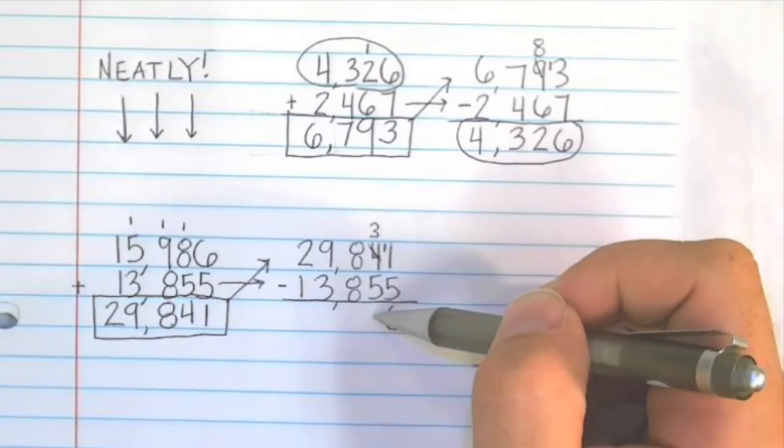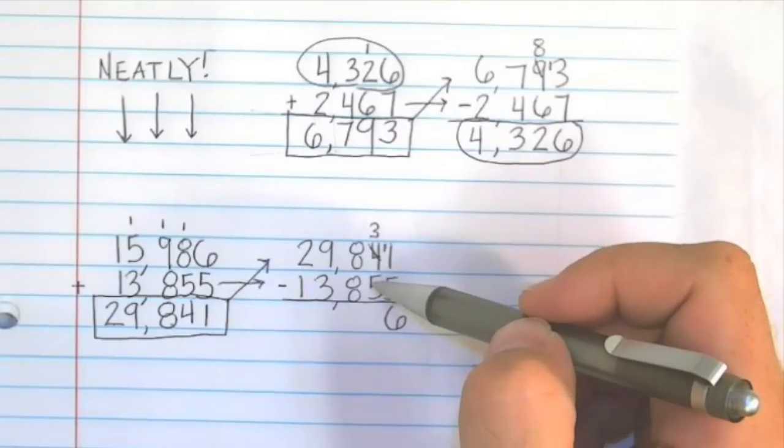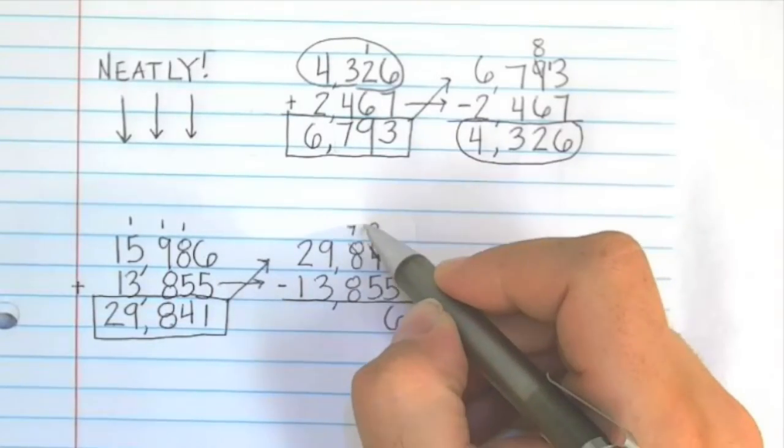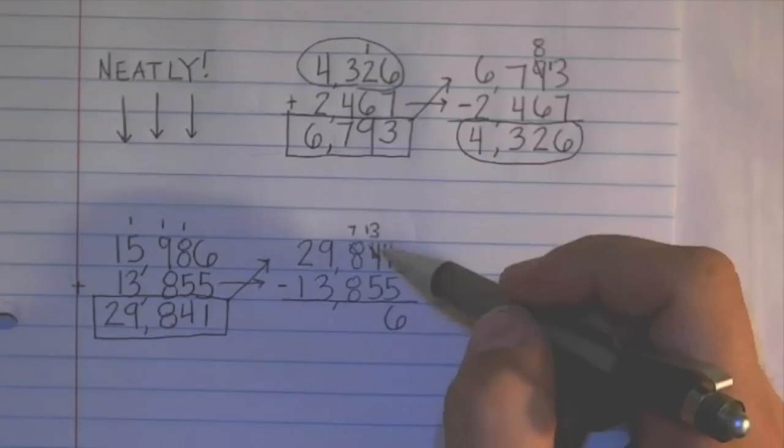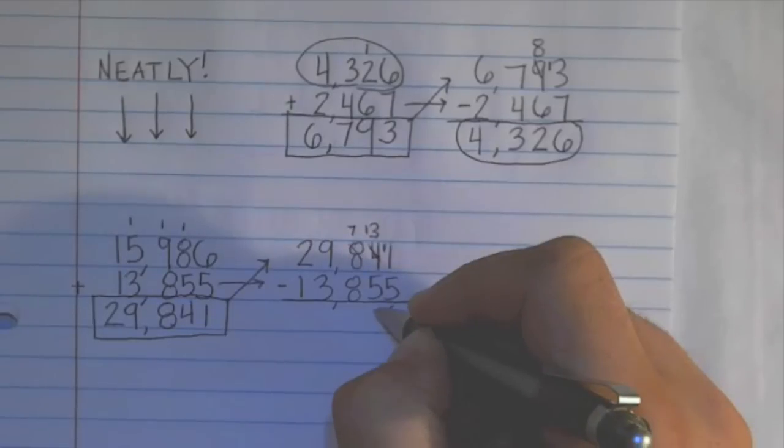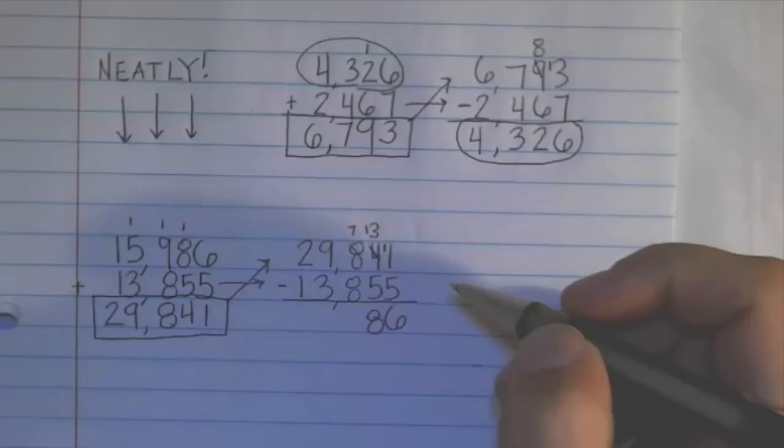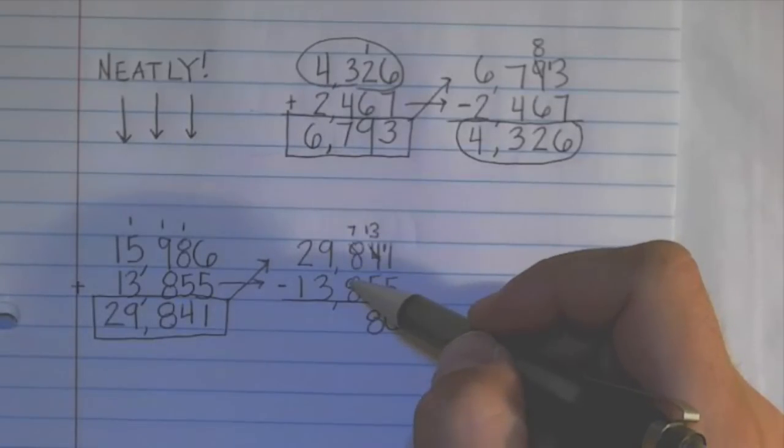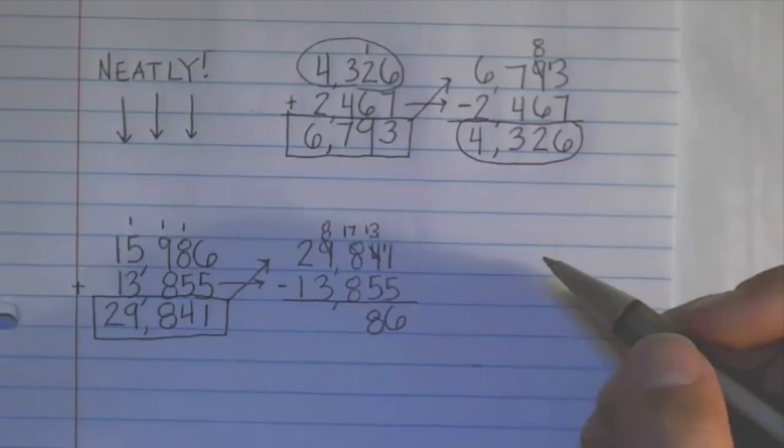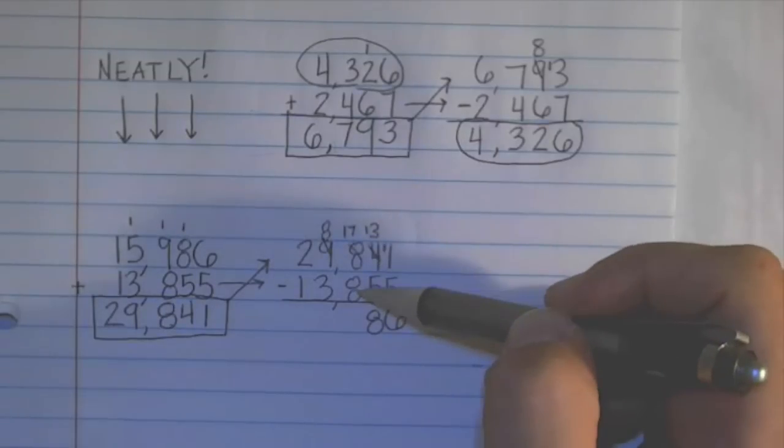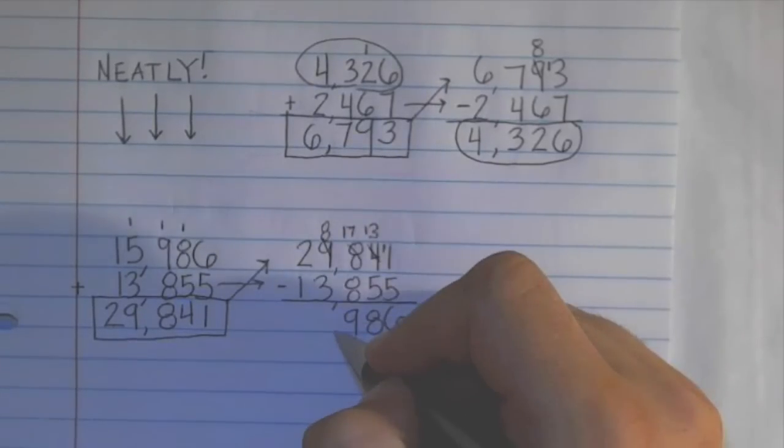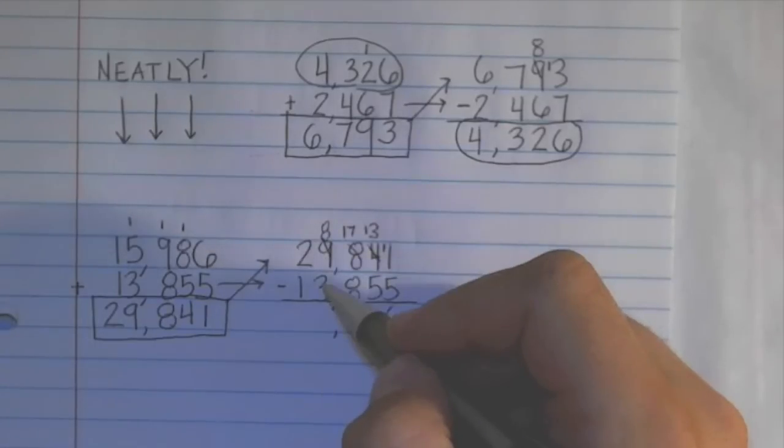Going here to the 10s column, 3 minus 5, we can't do because 5 is larger than 3. So we borrow from the 8. So this 8 becomes 7. This 3 becomes 13. 13 minus 5 is 8. 7 minus 8, we can't do that. So we need to borrow from the 9. So the 9 becomes 8. The 7 becomes 17. 17 minus 8 is 9. Bring this comma down. 8 minus 3 is 5.